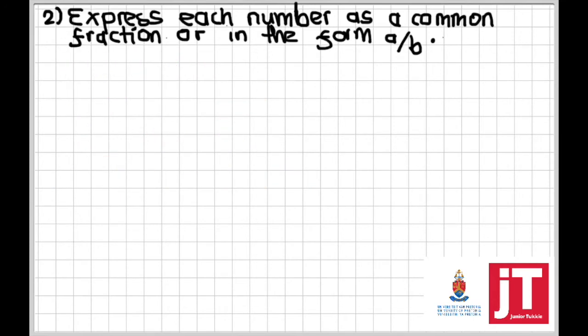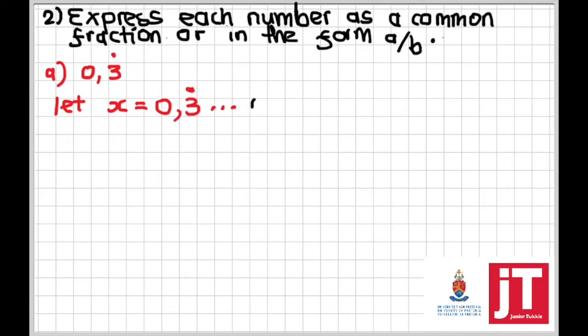In the next question, express each number as a common fraction — in the form a over b. We are given 0.3 recurring, where the dot on top of the 3 means it keeps repeating, giving 0.3333... up to infinity. To find the equivalent fraction, equations come in handy. We start by letting x equal that recurring decimal 0.3̄, and we make that our first equation.